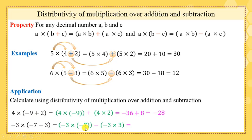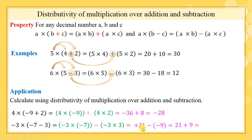Now, negative 3 × (negative 7 − 3): negative 3 × negative 7 = positive 21, negative 3 × 3 = negative 9. We have a negative sign outside the parentheses, meaning opposite. So positive 21 minus negative 9: what's the opposite of negative 9? Positive 9. Therefore 21 + 9 equals 30.